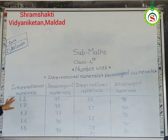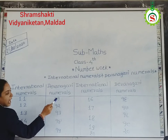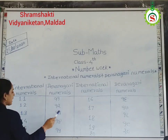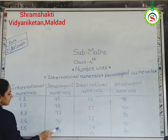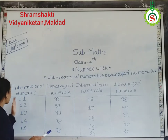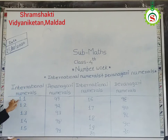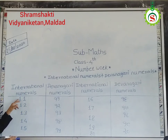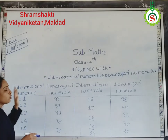Here, international numeral 11 and in Devanagari this is called Akra. Then 12 — Bara. 13 — Tera. 14 — Chauda. 15 — Pandra. The value of international numerals and Devanagari numerals are the same, but reading and writing of that number is different. The value of 11 and Akra is the same, but here we write in English and here we write in Marathi — means international numerals and Devanagari numerals.